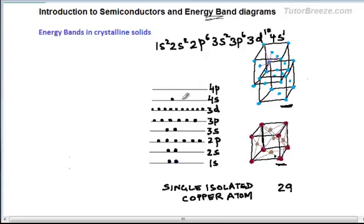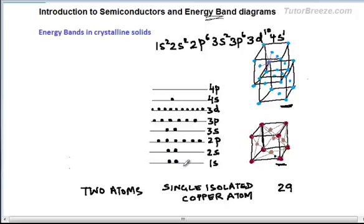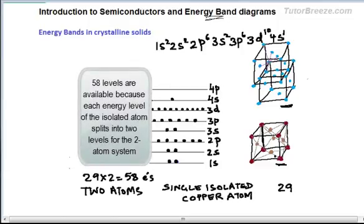If two atoms of copper are brought close together, one atom can sense the presence of the other and we need to account for this interaction. The outermost or valence electrons are affected the most, and inner electrons are least affected. In quantum mechanics, we say the wave functions of the two atoms overlap, and now we can think of it as one system with 2×29 = 58 electrons to accommodate. To accommodate 58 electrons, 58 levels are available, and each of those levels splits into two.